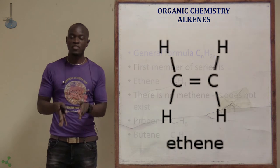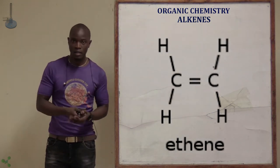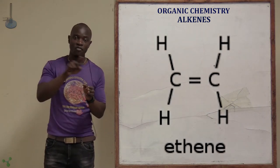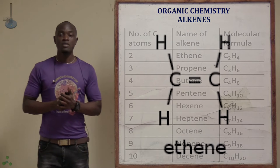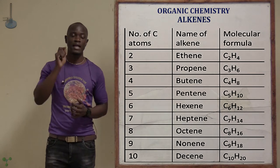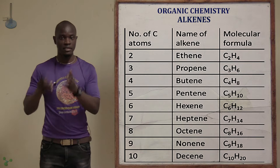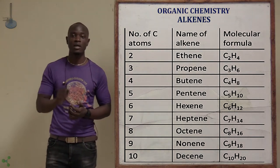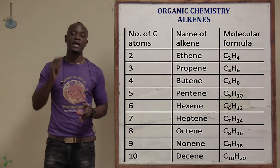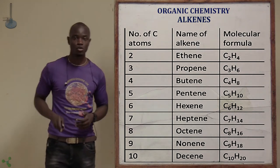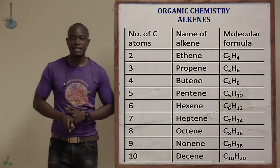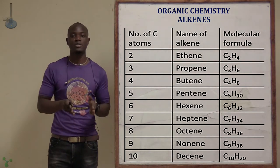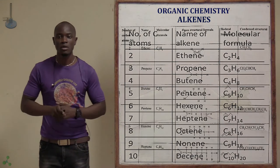The first member of the alkene family is ethene because at least two carbons are needed, and those two carbons will have a double bond between them. At least two carbon atoms are necessary for the formation of the double bond.